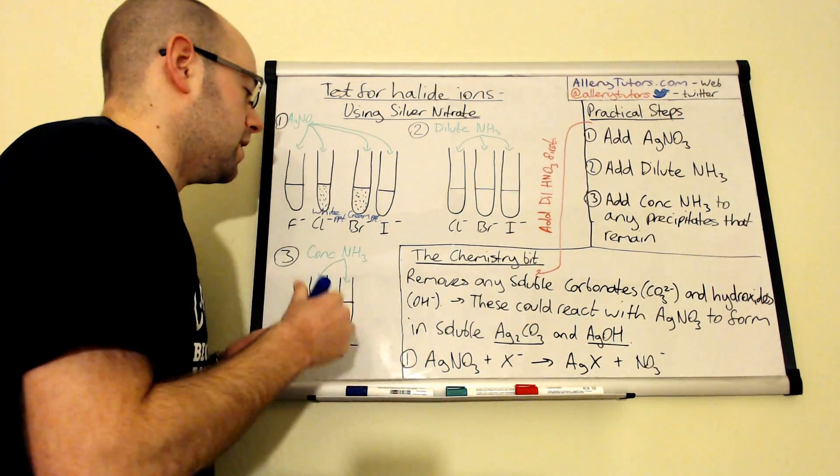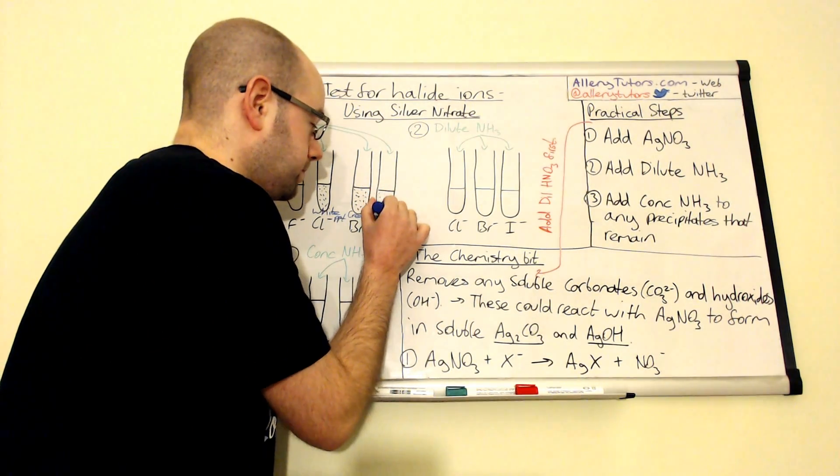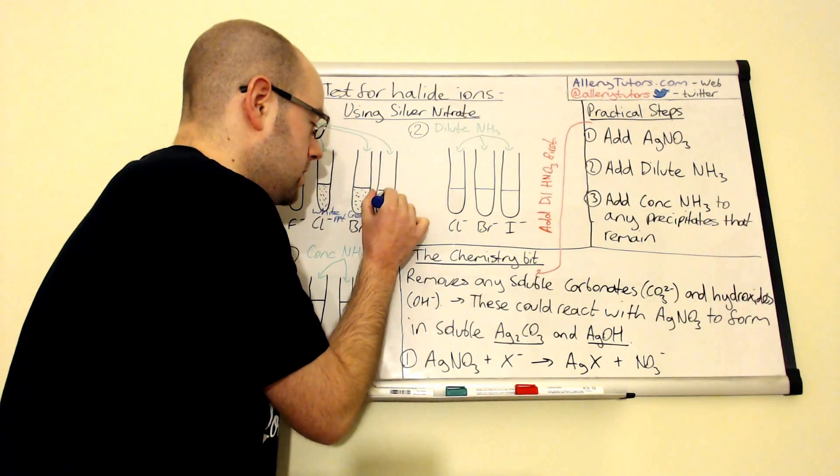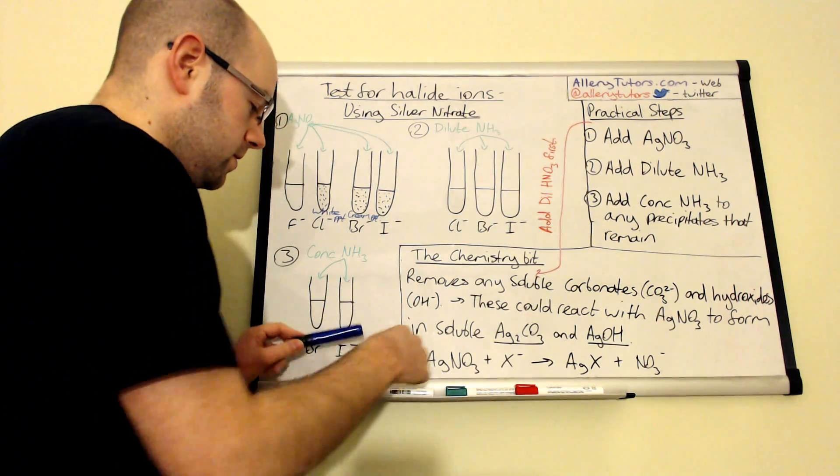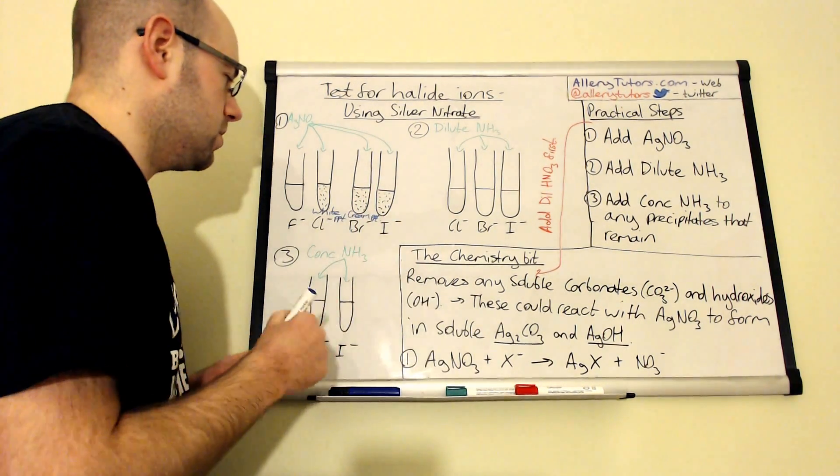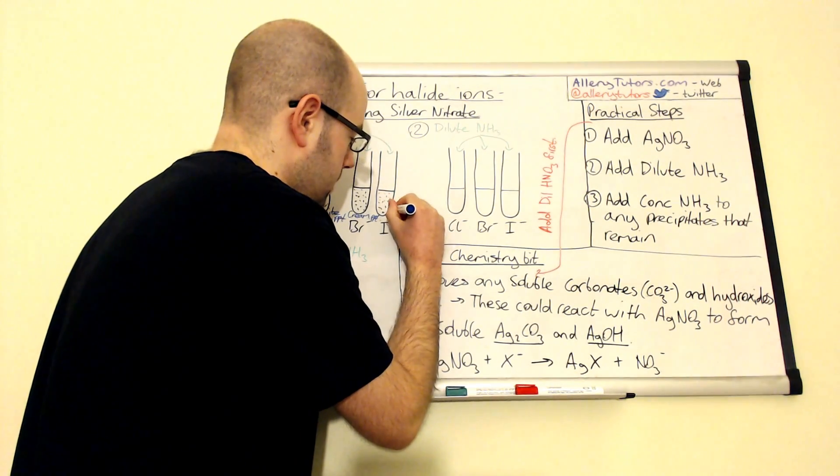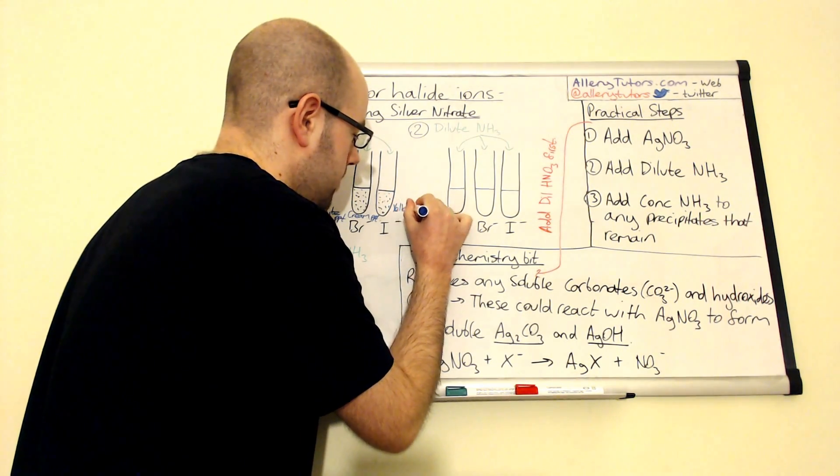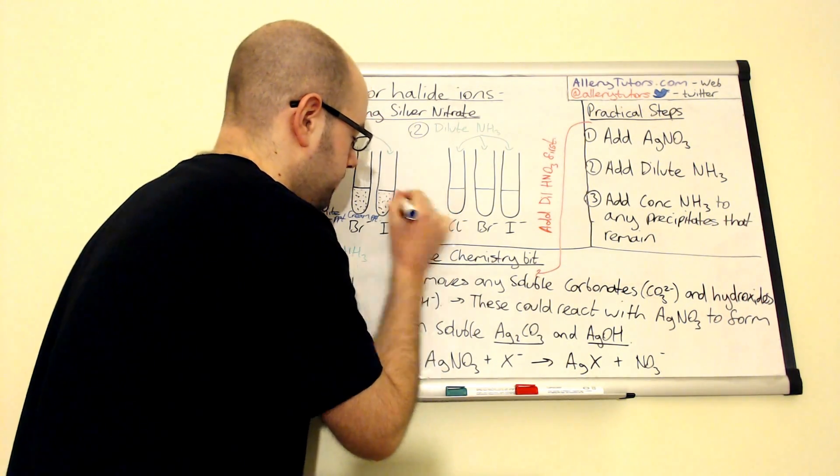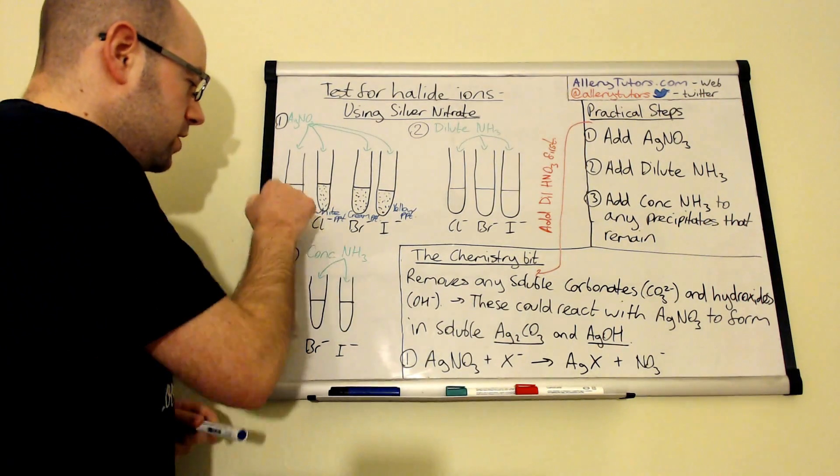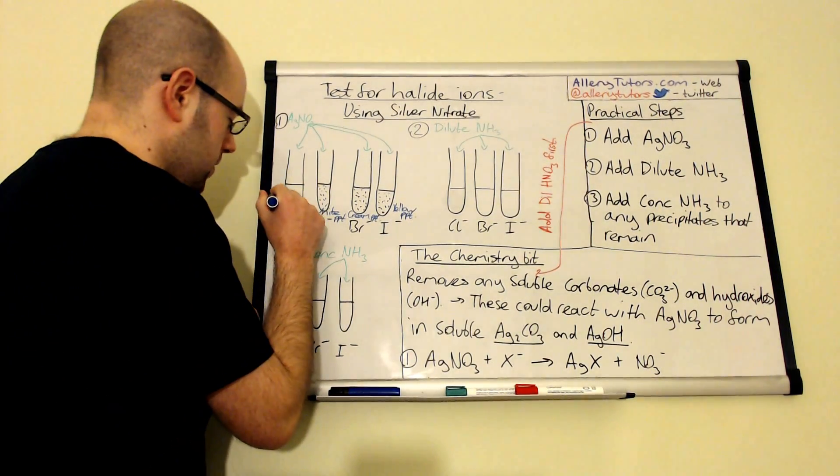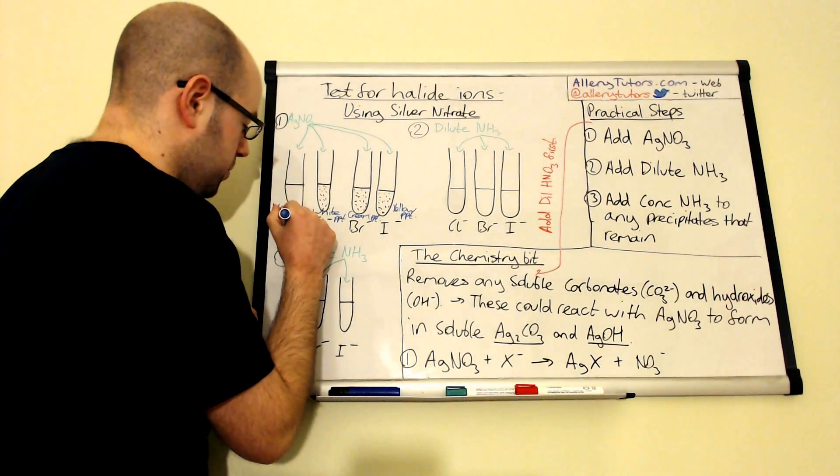The last one is the iodide ion. This one also forms a precipitate. This one's a little bit more obvious compared to these two colors. This one's yellow. It's quite an obvious yellow as well. So it forms a yellow precipitate. This one is, like I say, with the fluoride ion, there's no precipitate that's formed. You won't see anything.